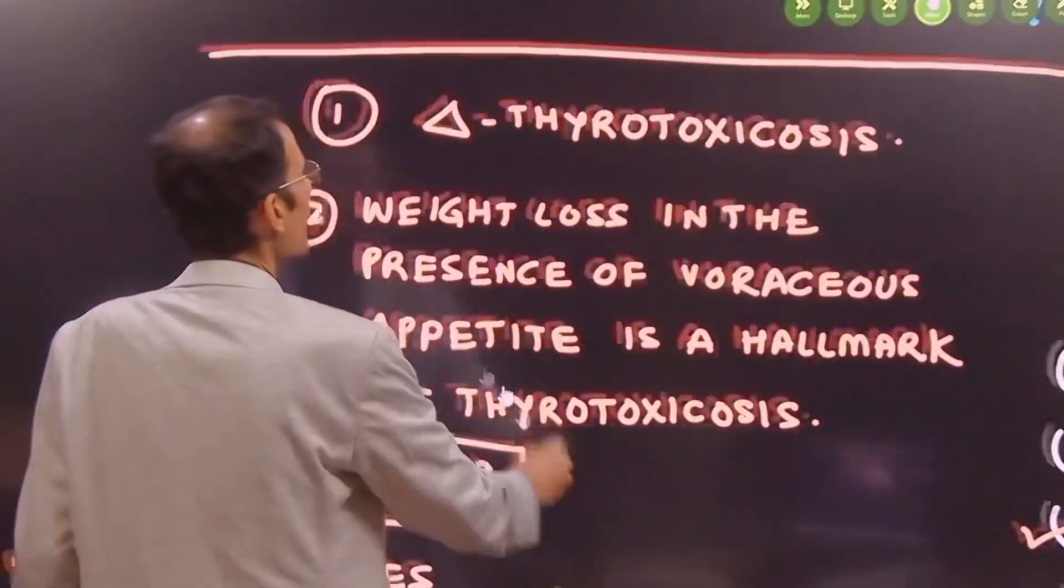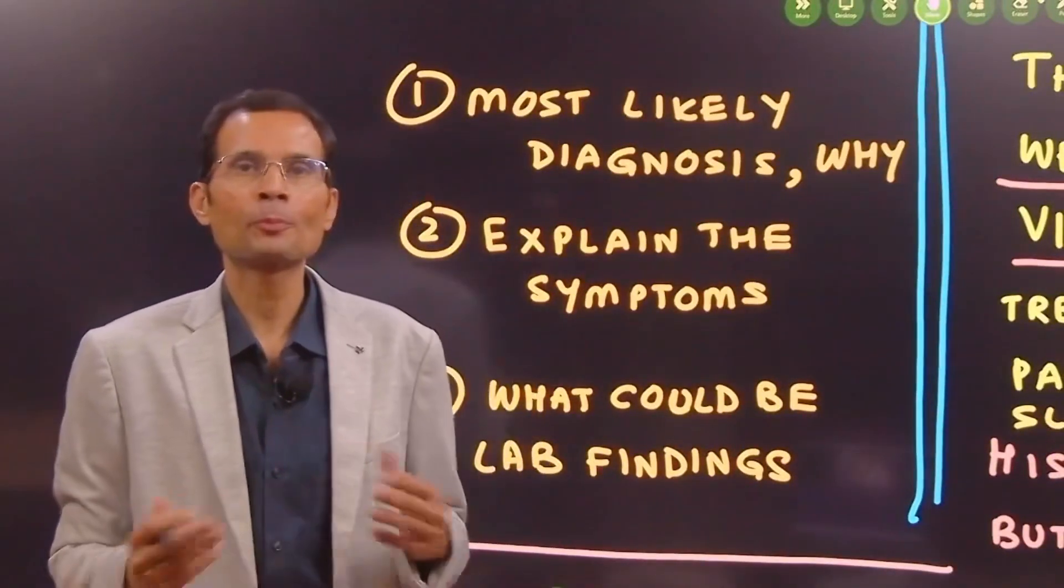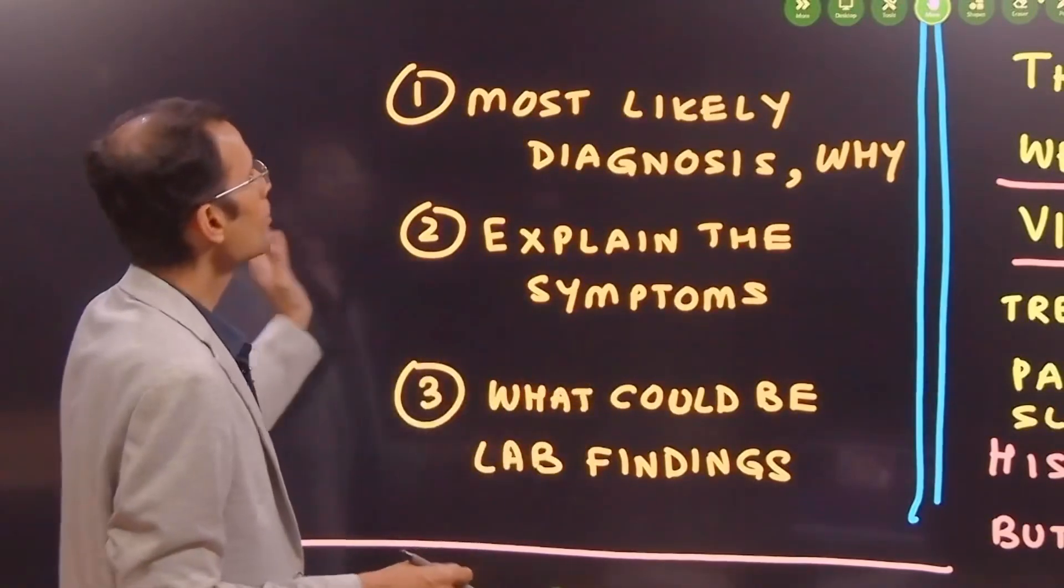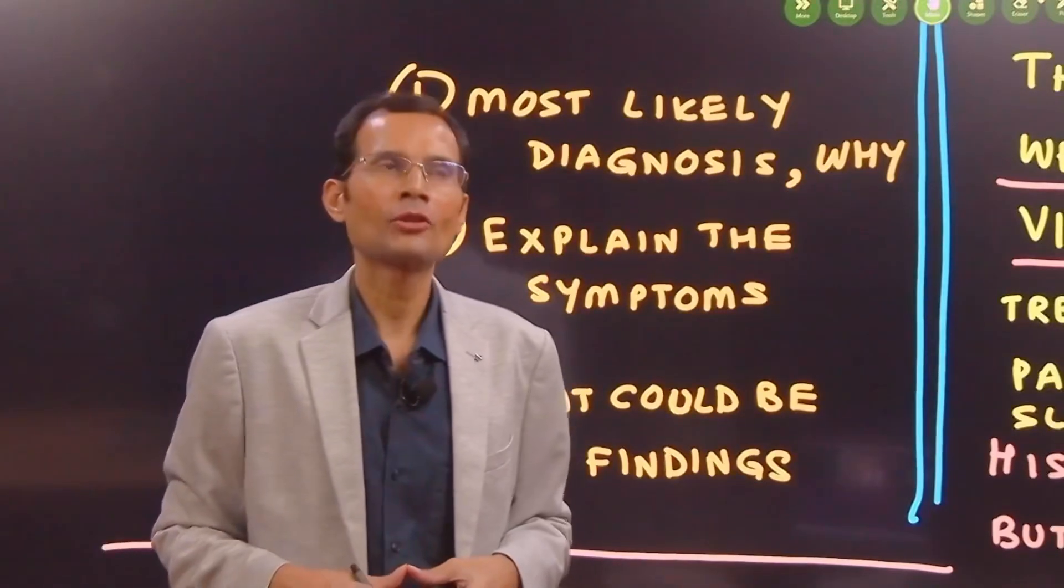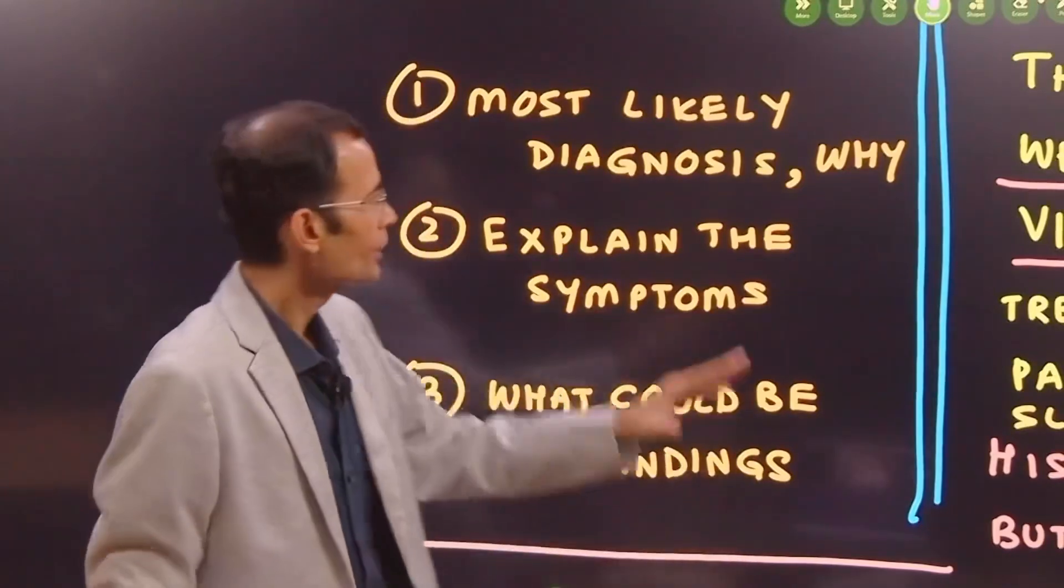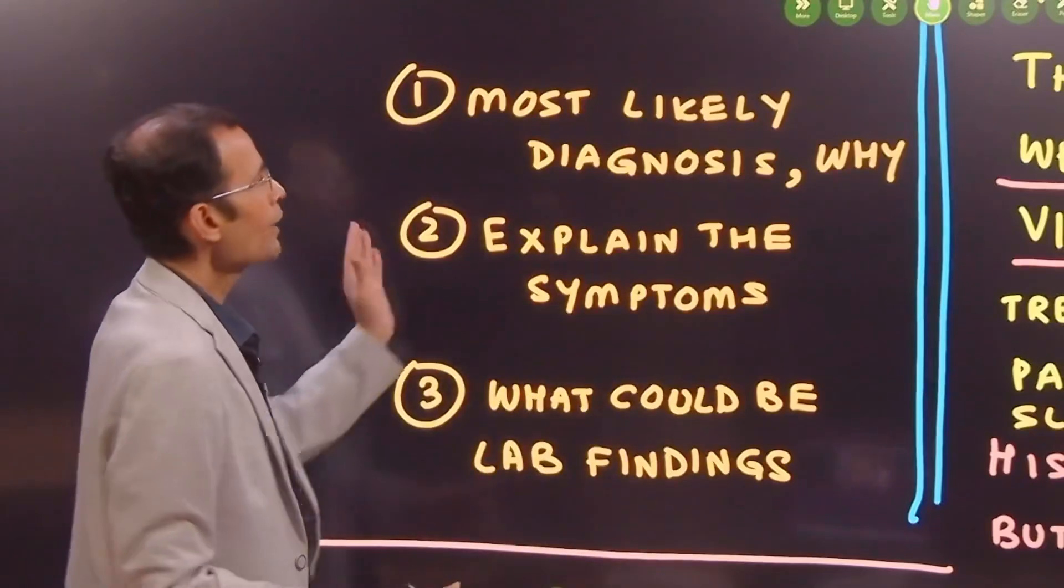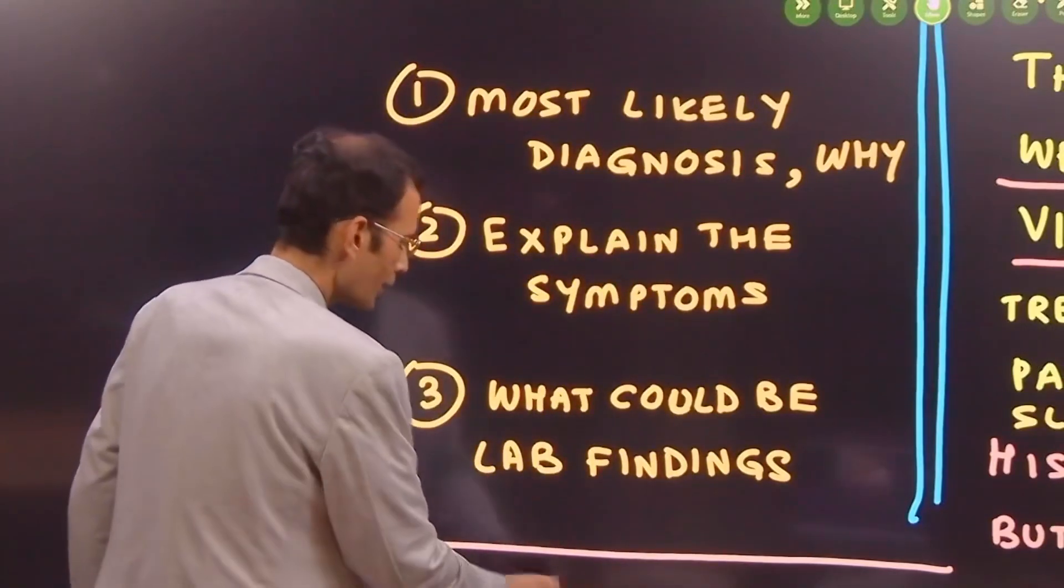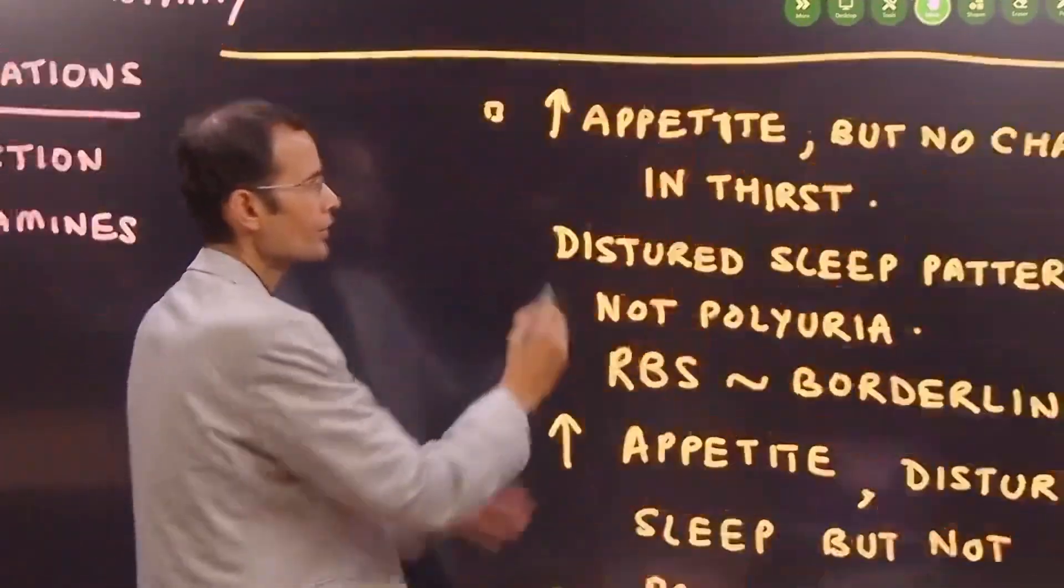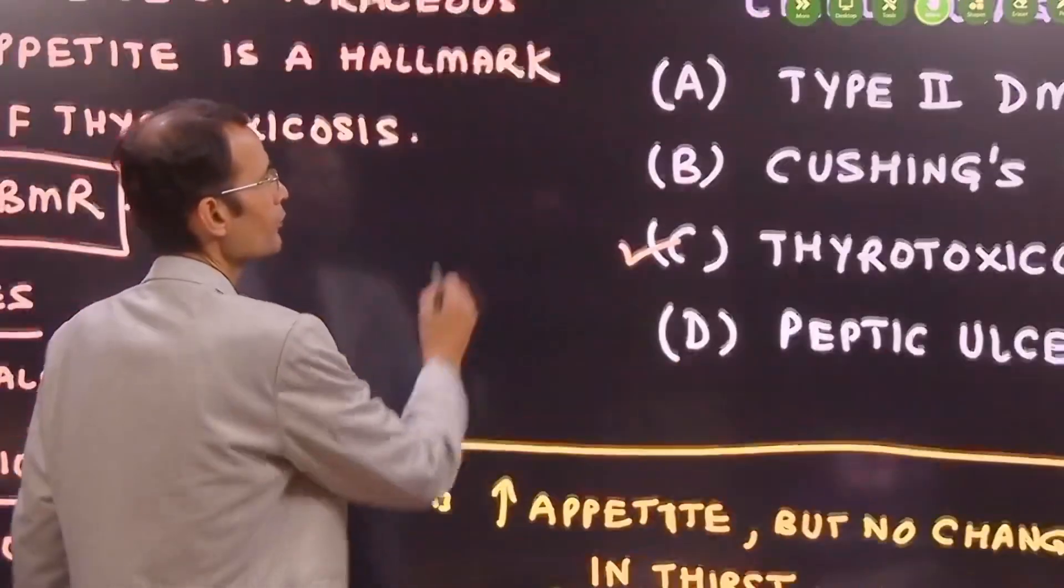So that was for the MCQ part. Now let's see if you are a first prof student and preparing for your prof exam. These could be the questions which can be asked. Most likely diagnosis. Again, you are not expected to diagnose the conditions. But you can think about the symptoms and come to a likely conclusion. And why that most likely diagnosis? If that is the question, then you can write down all these things, which we mentioned just now, rule out the other options, and why it is going in the favor of thyrotoxicosis.